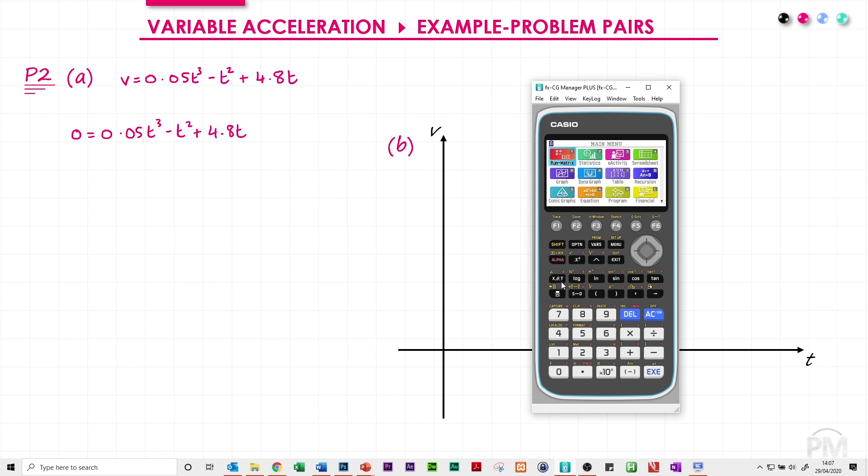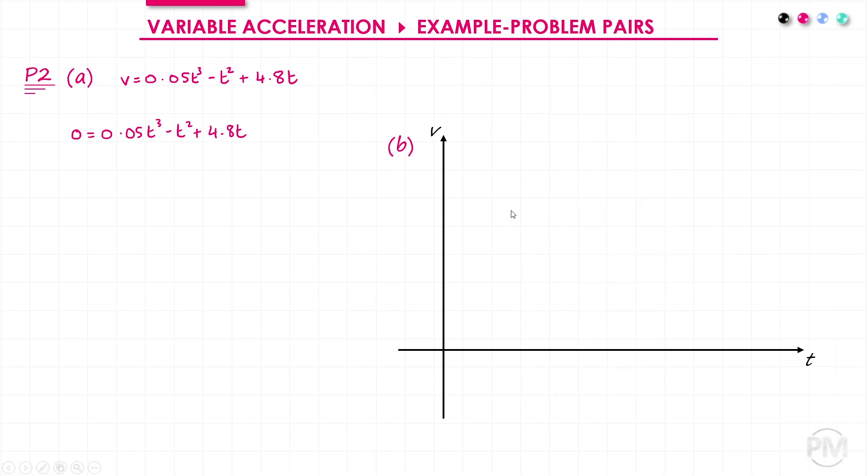So from the main menu, I'm going to go into Equation Solver, which is mode A. I'm going to go into Polynomial, which is F2. And the degree is 3 because it's a cubic expression. And I'm going to enter 0.05 for the cubic term, minus 1 for the quadratic, 4.8 for the linear term, and 0 for the constant. That tells me the solutions are 0, 8, and 12.